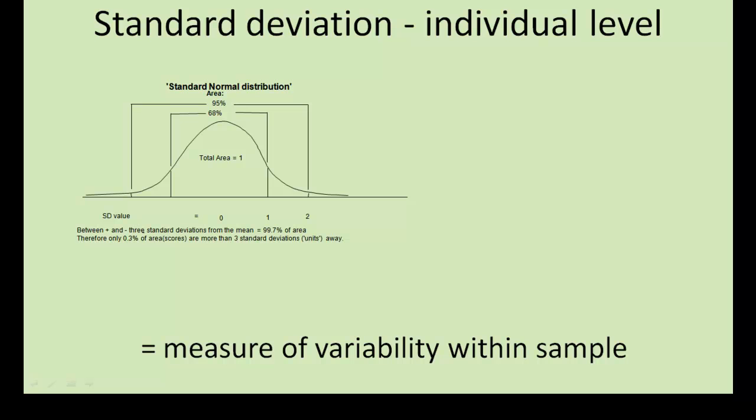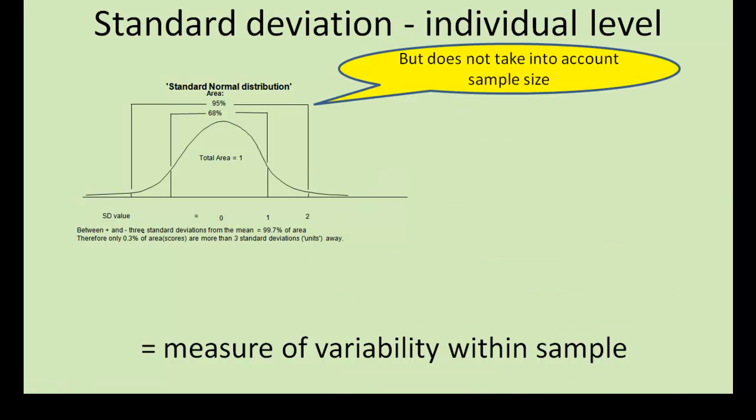To be able to consider how we might quantify the sampling variability in our sample means, we need to consider a bit of statistical theory. We can be shown that for very large samples, approximately 70% of estimated means will fall within one standard deviation of the true mean, that is the population value. But does this take into account sample size?